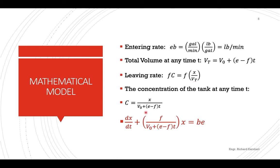Substituting into the rate equation and transforming it into linear form, we get the final equation. All we need to do is determine the constants F, V-sub-O, E, and B, then substitute into the equation.